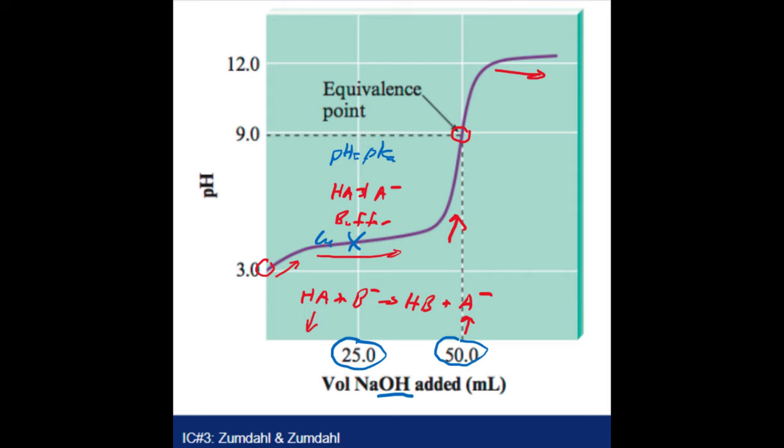Anywhere else along the buffer, if you want to find the pH, you'd have to use the Henderson-Hasselbalch equation, because you wouldn't have equimolar pH and pKa. Once you get past the equivalence point, all you have here is an excess of base. And so that means if you want to find the pH here, you would have to find the concentration of your base present.